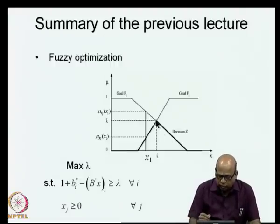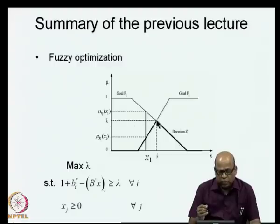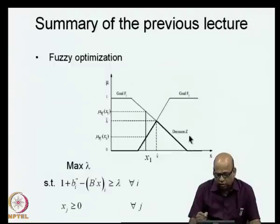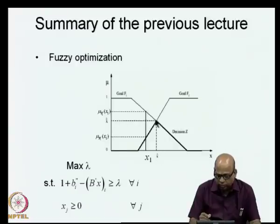It is within this decision z that we look at the maximum membership function value. In the case of conflicting goals, we define the fuzzy membership function for the decision z and then look at that particular value of x which will provide us the maximum value of the membership function on the decision z.